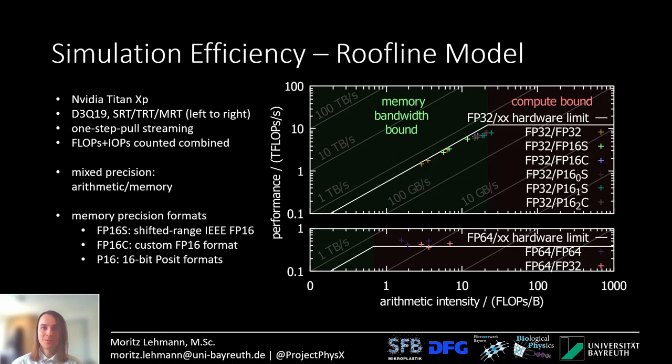You see that Lattice Boltzmann always is in the memory bound scenario, even if I use spare arithmetic capabilities to do memory compression into custom floating point formats designed specifically for Lattice Boltzmann. The bottom plot shows a separate FP64 analysis, because the hardware limit on the Titan XP is much lower for FP64. In the compute limit we still get peak efficiency, and some dots are even above the hardware limit because the boost clocks of the GPU are slightly higher.